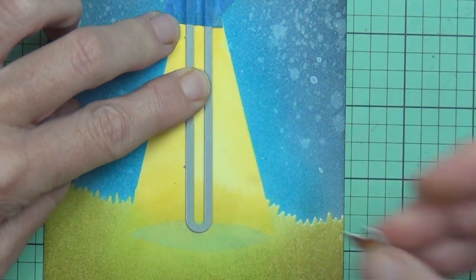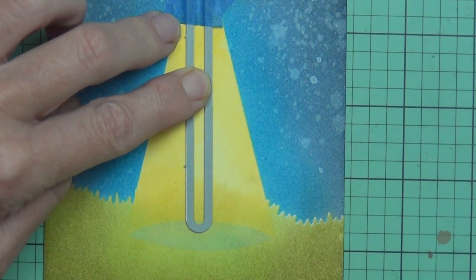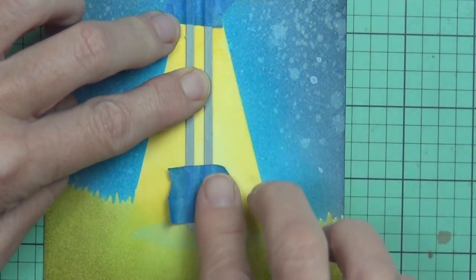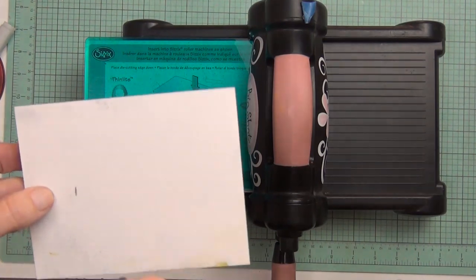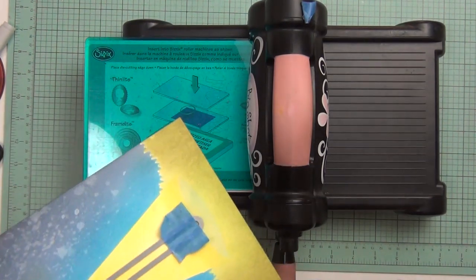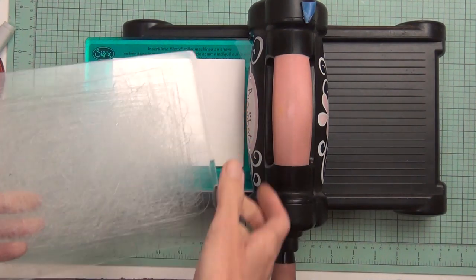The die that I'm using here is a Swing and Slide straight die. It's actually too long for what I need, so I'm only going to partially die cut it. I've made a mark on the back of my cardstock where I want to die cut to.